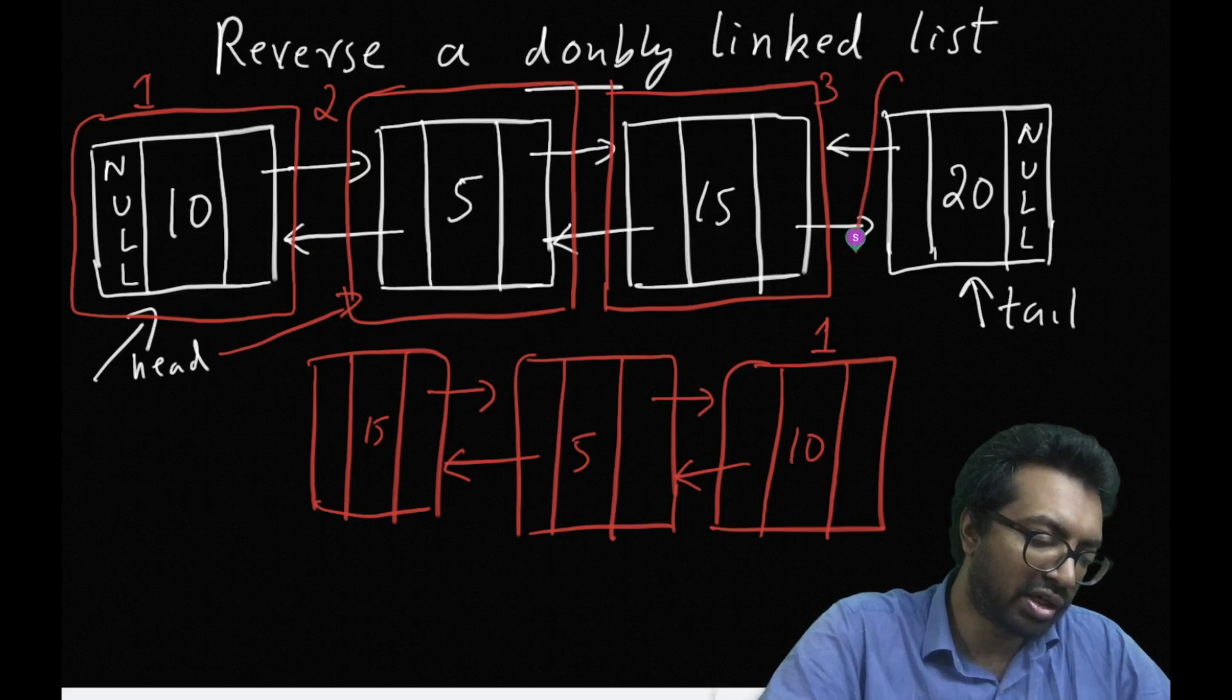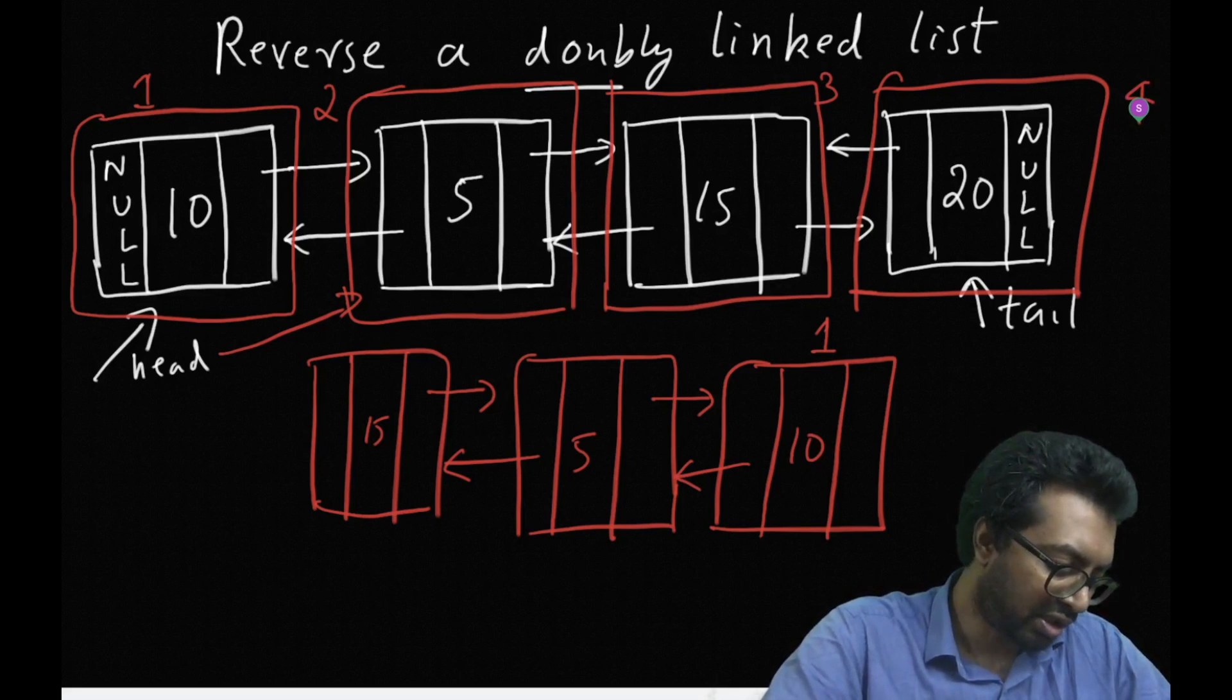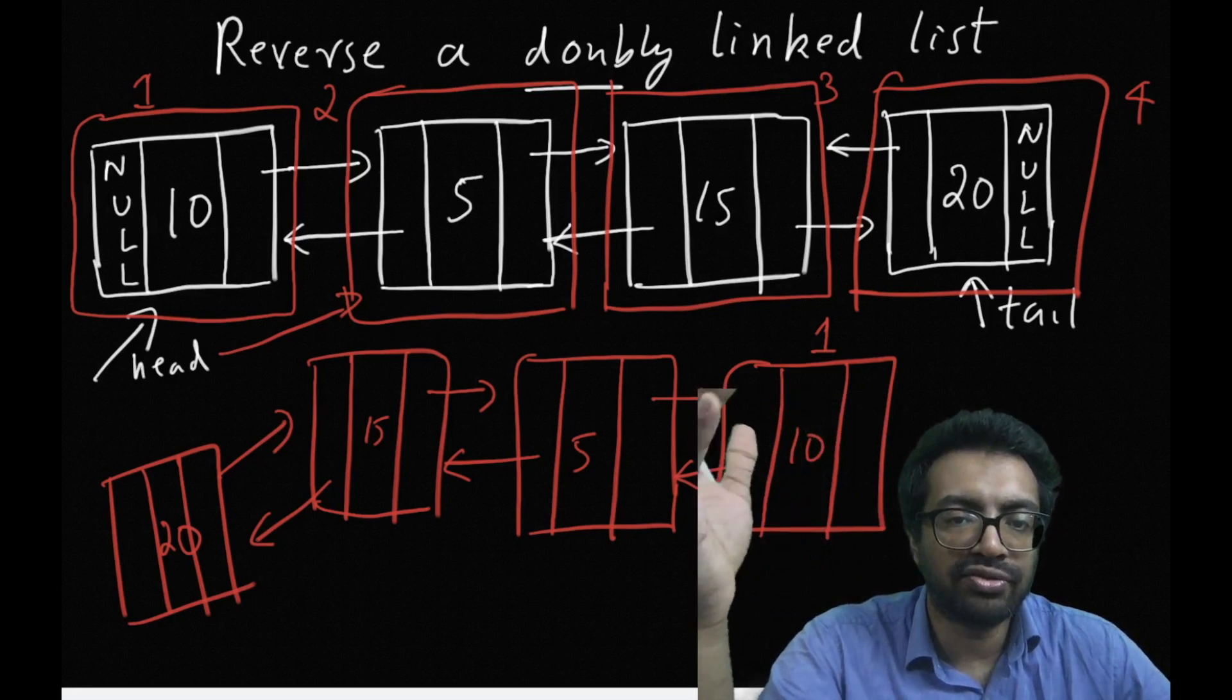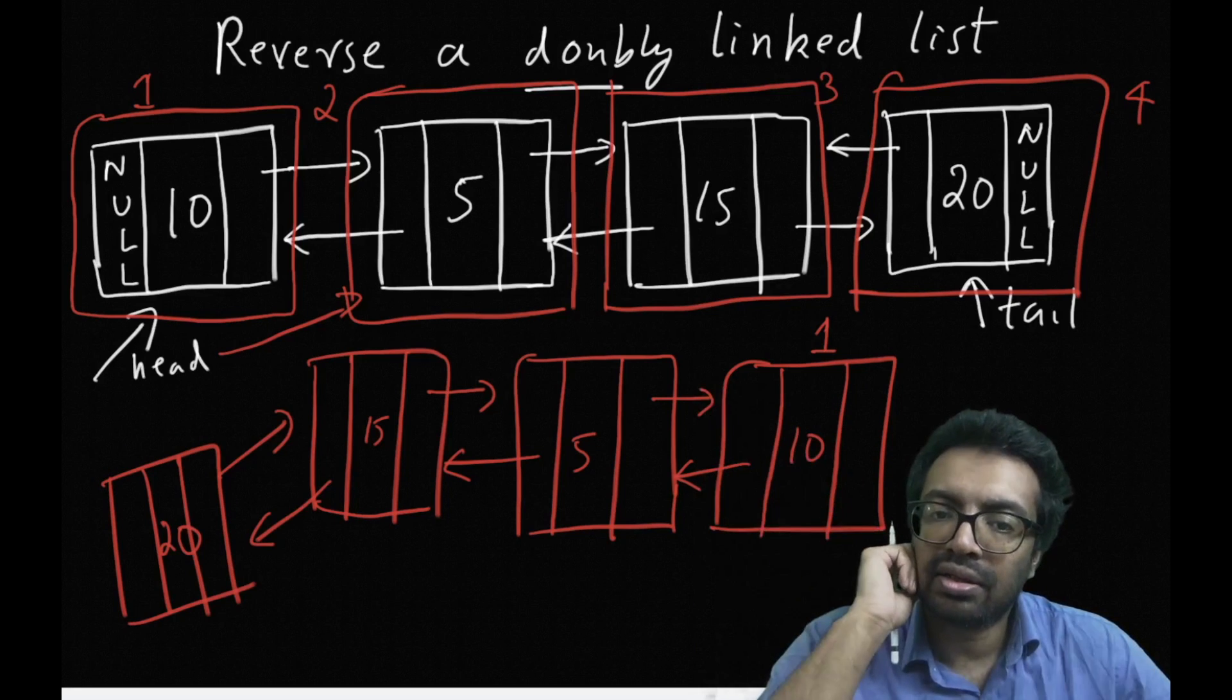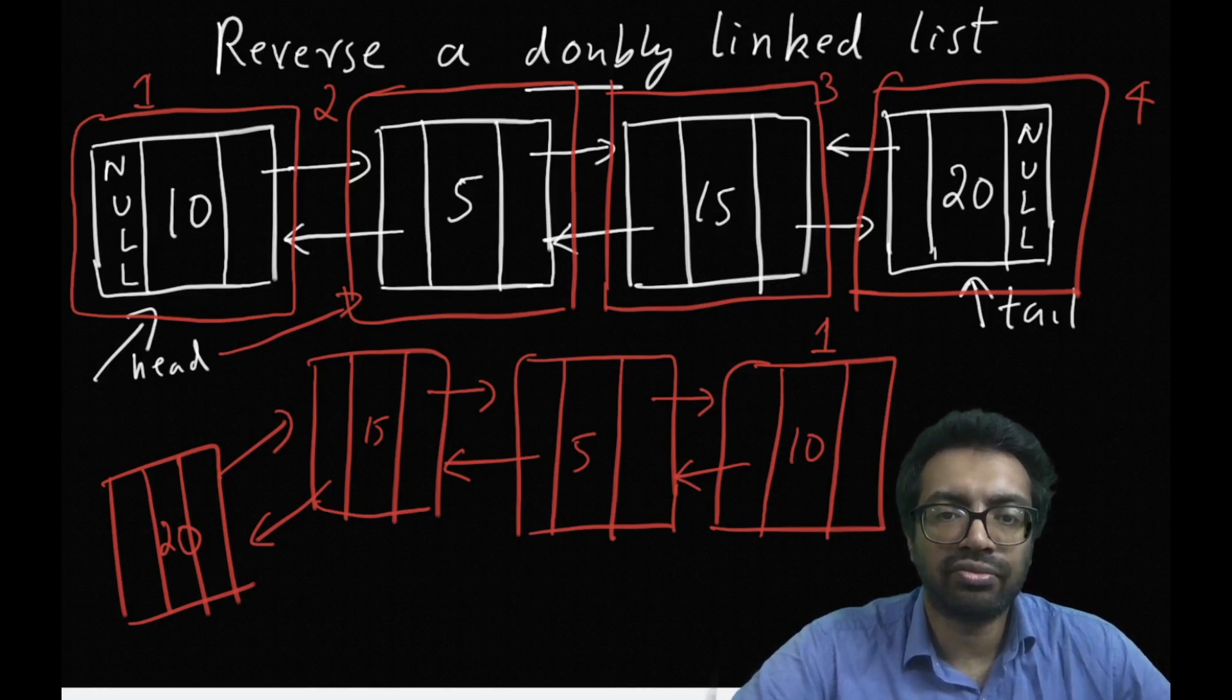Now we take 20 which is the last node, that is step 4, and again that node, 20, is again added as the front node in the second list. So now we have a completely reversed list. As you can see we have got a completely reversed list.